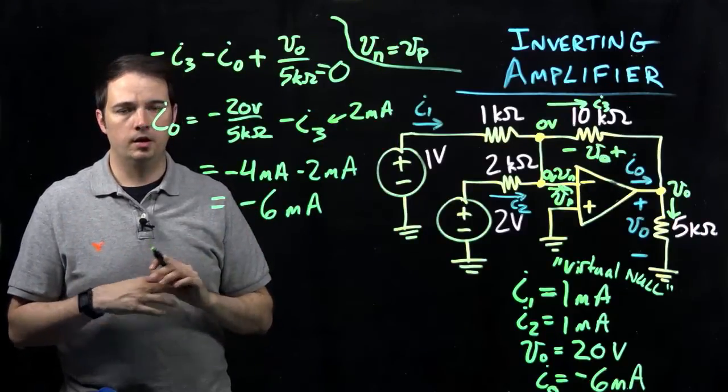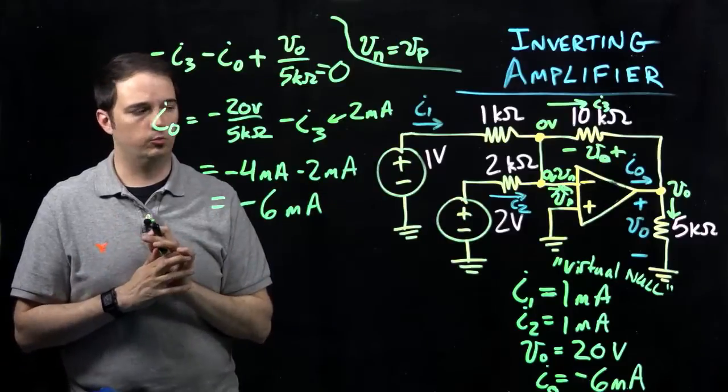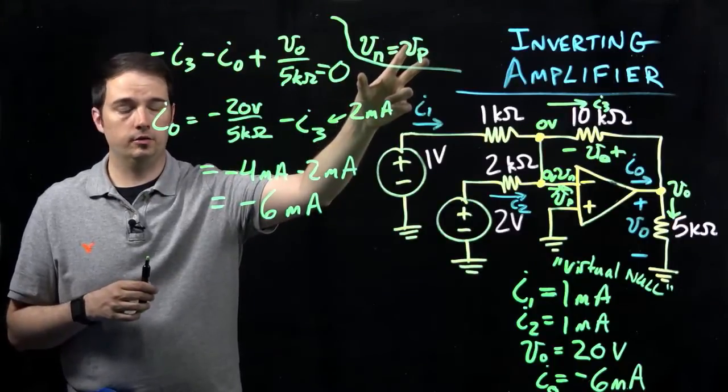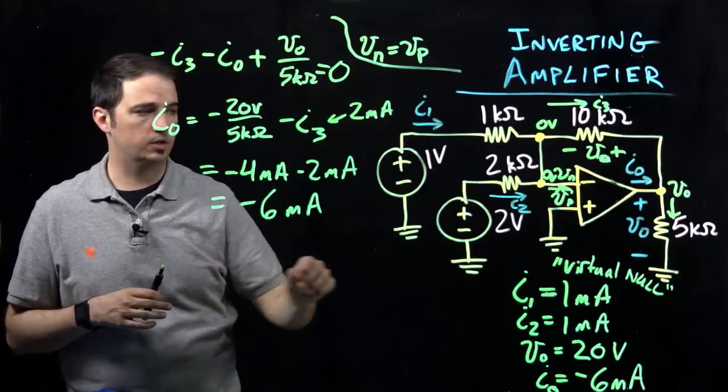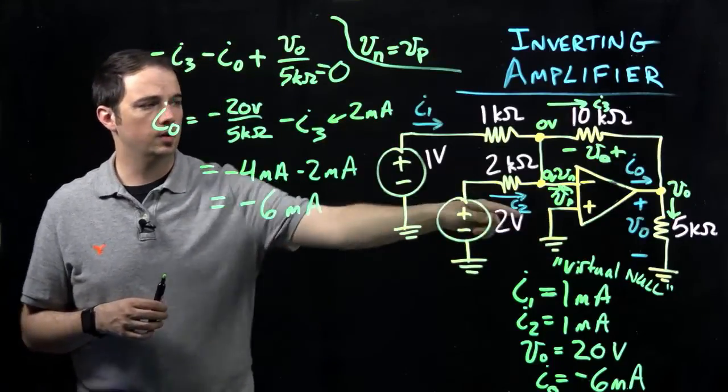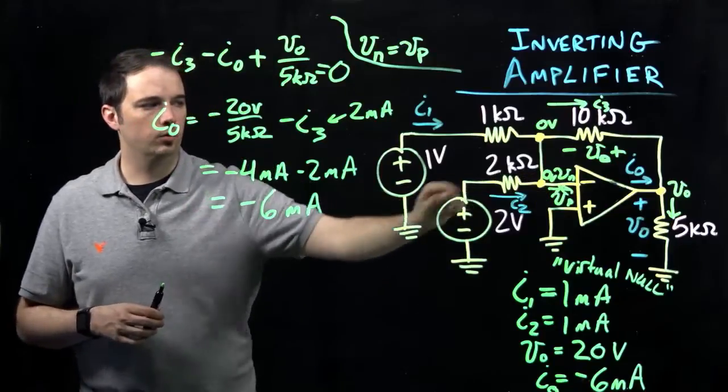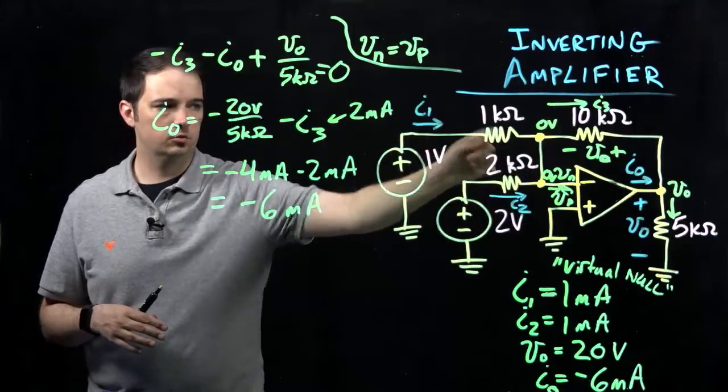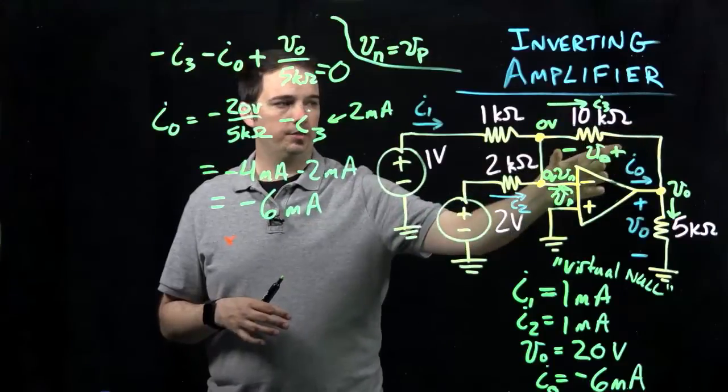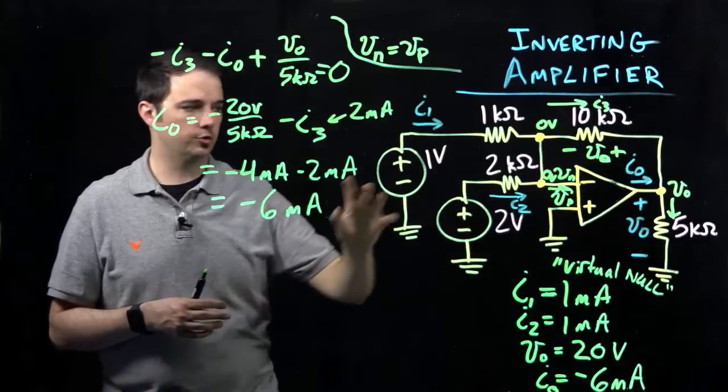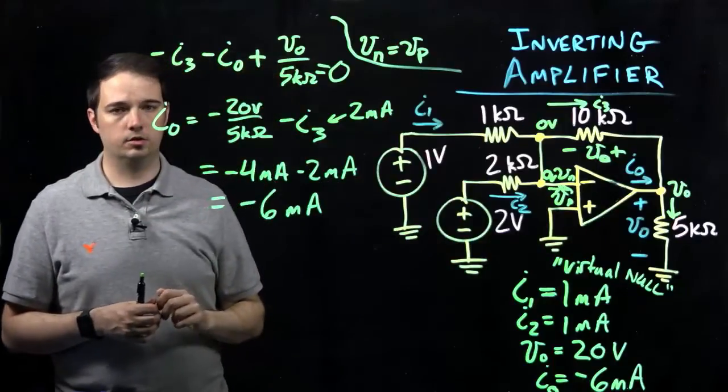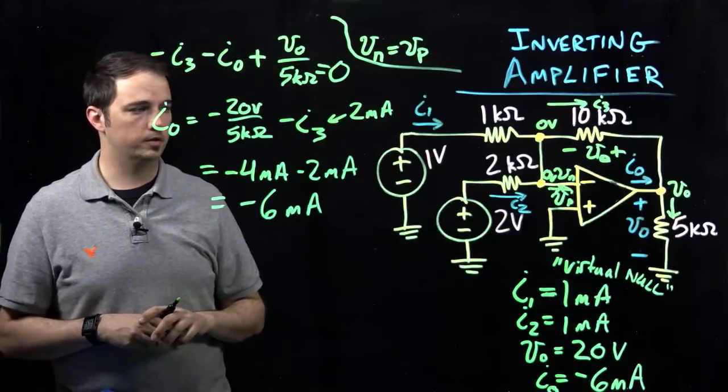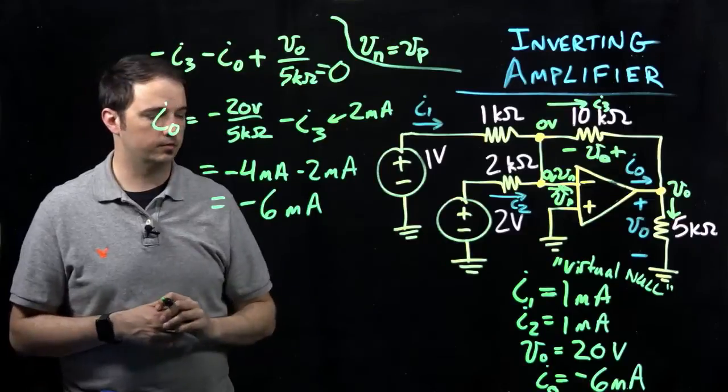To quickly recap, a really important part about this circuit configuration was to note this virtual null. Because we know the condition under the ideal case for the op amp needs to be that our two input terminals are at the same potential, and one was grounded, the other input VN would also have to be at virtual null or zero potential. That allowed us to calculate the currents through these two branches, figure out the voltage drop across this 10 kiloohm resistor, and ultimately figure out how much current is traveling out from the op amp, which was negative six milliamps.